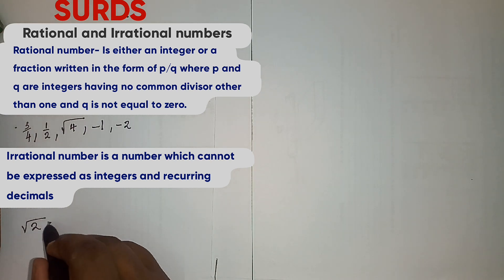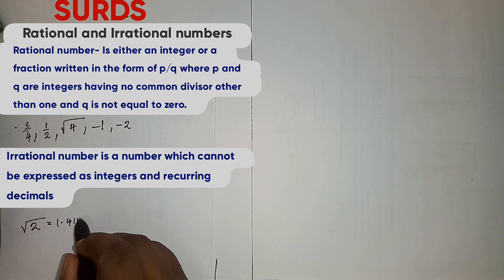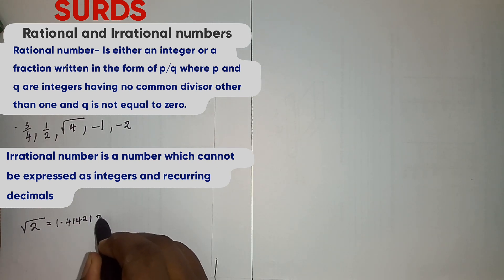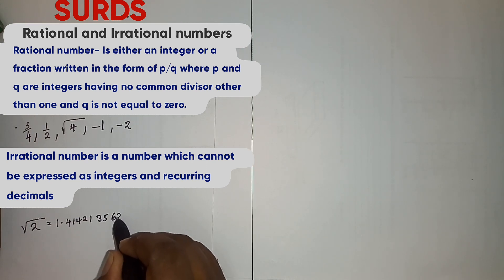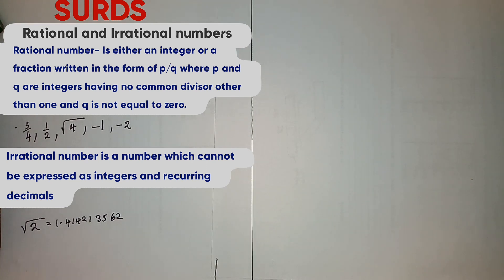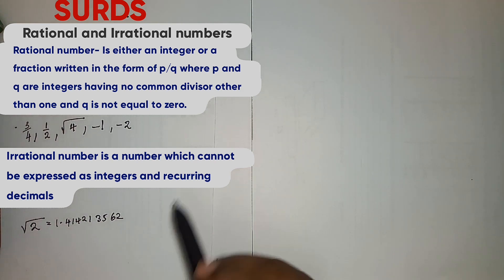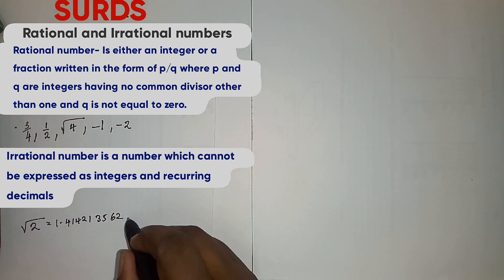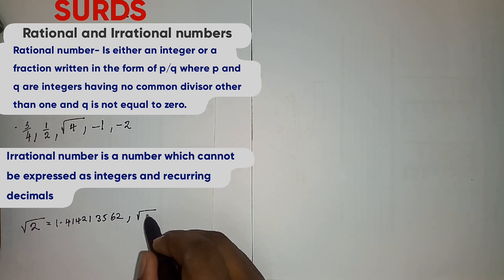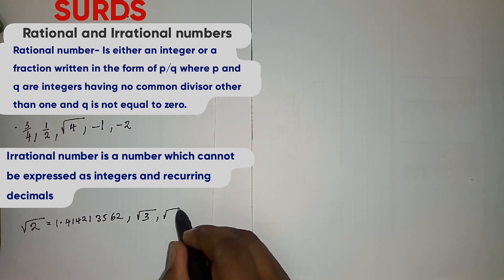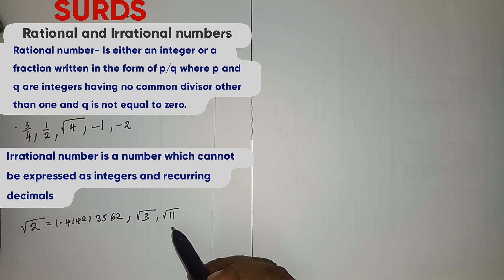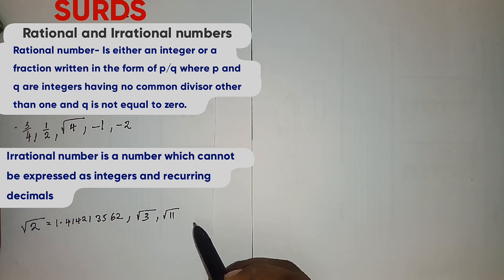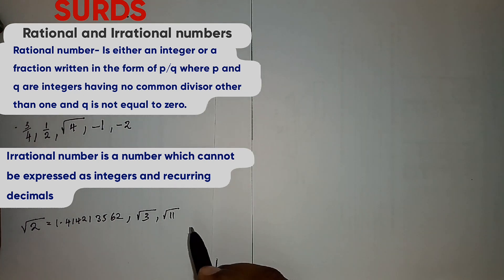Root 2 equals 1.414213562, so this is not a recurring decimal — it is irrational. Other examples of irrational numbers include root 3 and root 11. We cannot find their exact roots, so those are what we call irrational numbers.